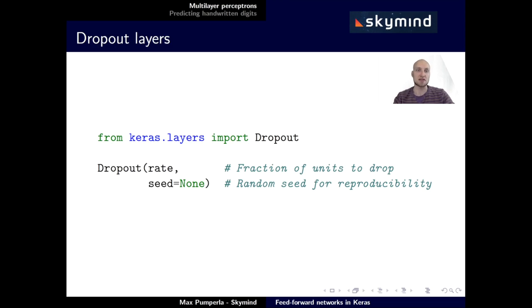Dropout layers are much easier to specify. Essentially, you just have to specify a rate, meaning a value between zero and one, which indicates the fraction of units to drop in each forward pass. If you want, you can also specify a random seed for reproducibility.